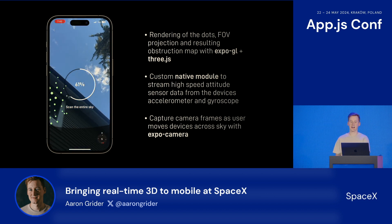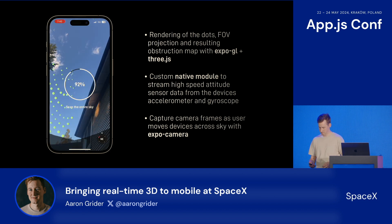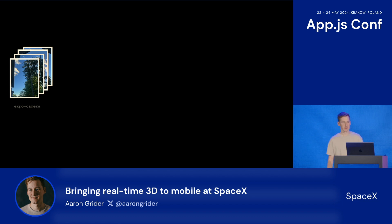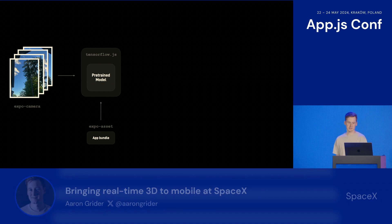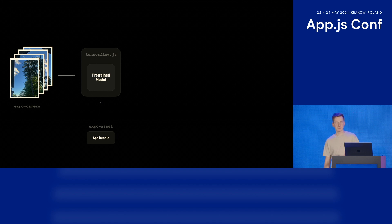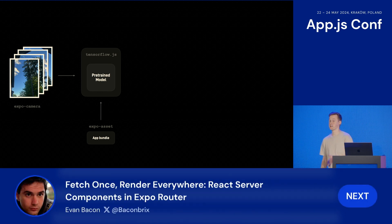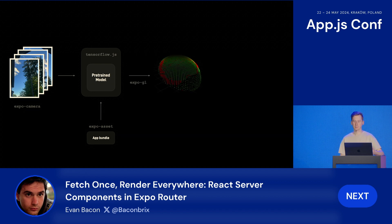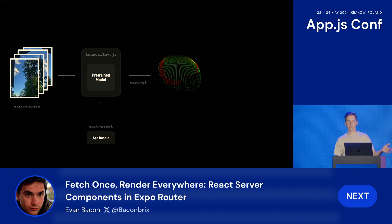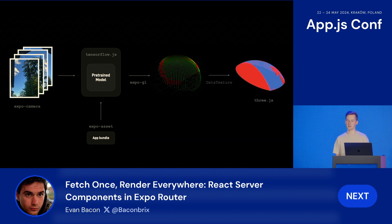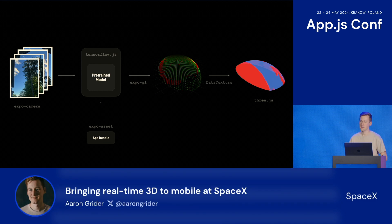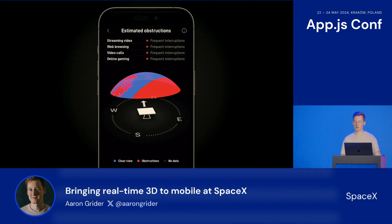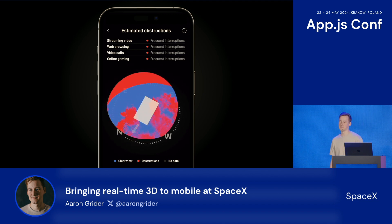As the user scans the sky, we continuously capture images with Expo Camera. We capture a set of images, load a custom trained model with Expo Asset that we have on-device, and feed the camera frames into the model with TensorFlow.js — which is Expo GL GPU accelerated, by the way, which is another super cool use of Expo GL. We get a matrix out that represents our predicted obstruction map, then convert that matrix into a data texture in Three.js, apply it to a sphere geometry, and mask it with the user terminal's field of view. We take this map, place it on top of a model of the hardware, and it gives the user an interactive obstruction map rendered in 3D.